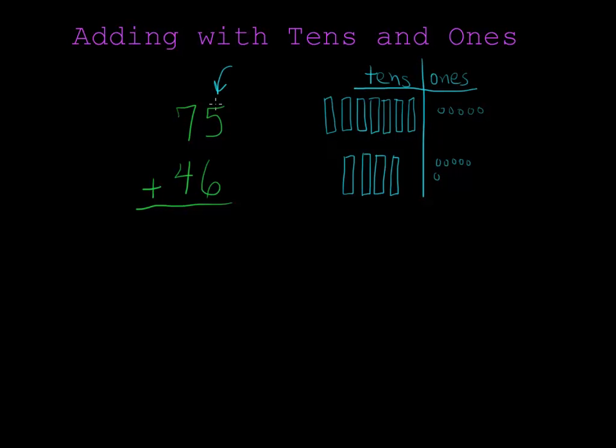Always start by adding your ones column first. 5 plus 6 is 11. You can see that when I make a group of 10, there's going to be one left over. So that's the 11.